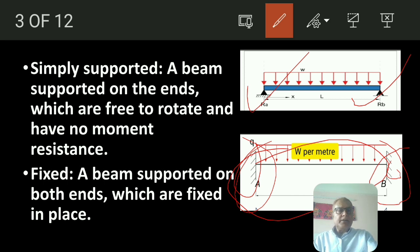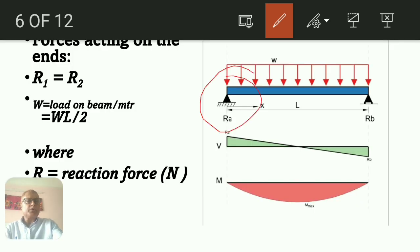So in the fixed beam, there will be three kinds of reactions available at the ends, Support A and support B: R1 and R2. Total load, W is per meter, length is L. Total weight will be WL.